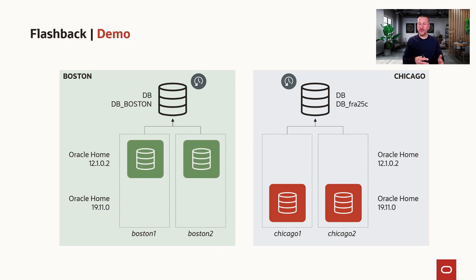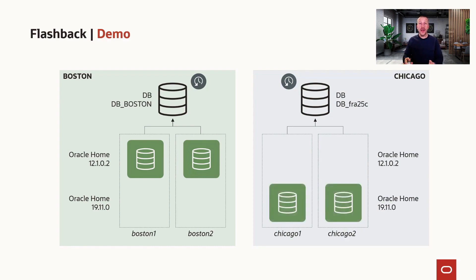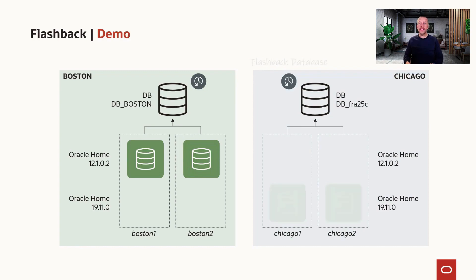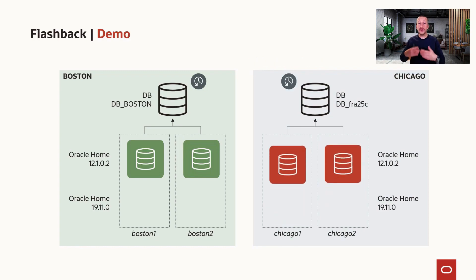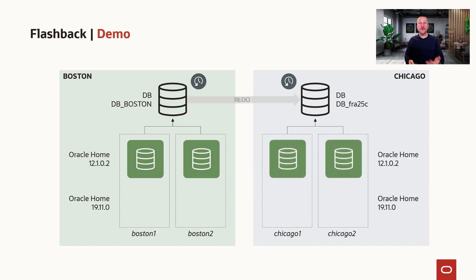Now that I know the flashback operation has succeeded on the primary database, I can restart the standby database and also do a flashback of that database. When it completes, I can restart the databases in the old Oracle home, start them in mount mode, and then re-enable redo transport and redo apply on the standby database. So that's the overall procedure — let's see how it works in a real demo.